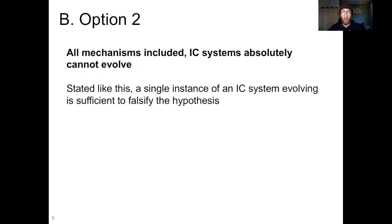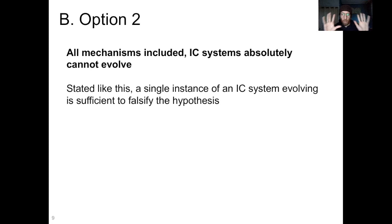But that's not the only potential interpretation of his argument. Option two is that he's saying all the mechanisms are included, and even including all those mechanisms, irreducibly complex systems absolutely cannot evolve. But that's your hypothesis: given every evolutionary mechanism, irreducible complexity is an insurmountable barrier to a thing evolving. Now, if you state it like that, a single instance of a system with irreducible complexity evolving is sufficient to falsify the hypothesis.